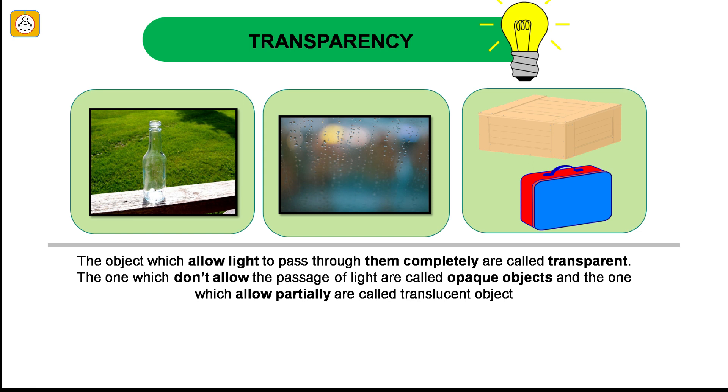The objects which allow light to pass through them completely are called transparent objects. For example, the glass bottle shown in the picture is a transparent object. You can actually see what is behind the bottle. The ones which do not allow the passage of light are called opaque objects. For example, the box and the suitcase. We cannot see what is behind them. And the objects which allow light partially are called translucent objects. For example, the picture shown in the center is a translucent window pane.